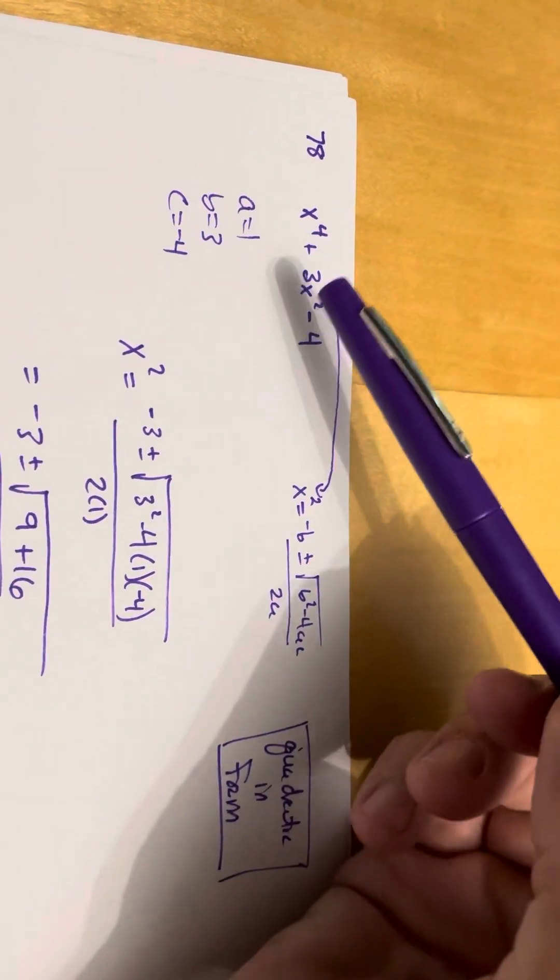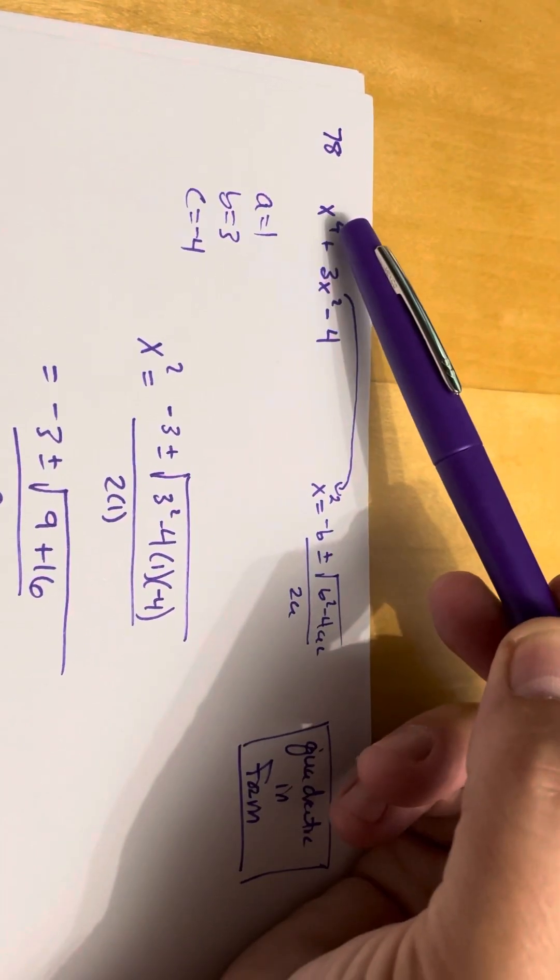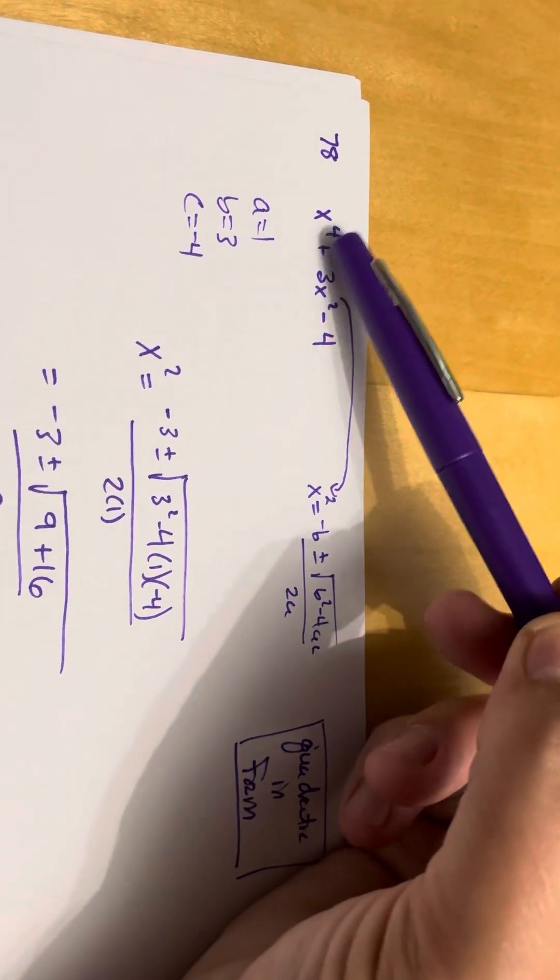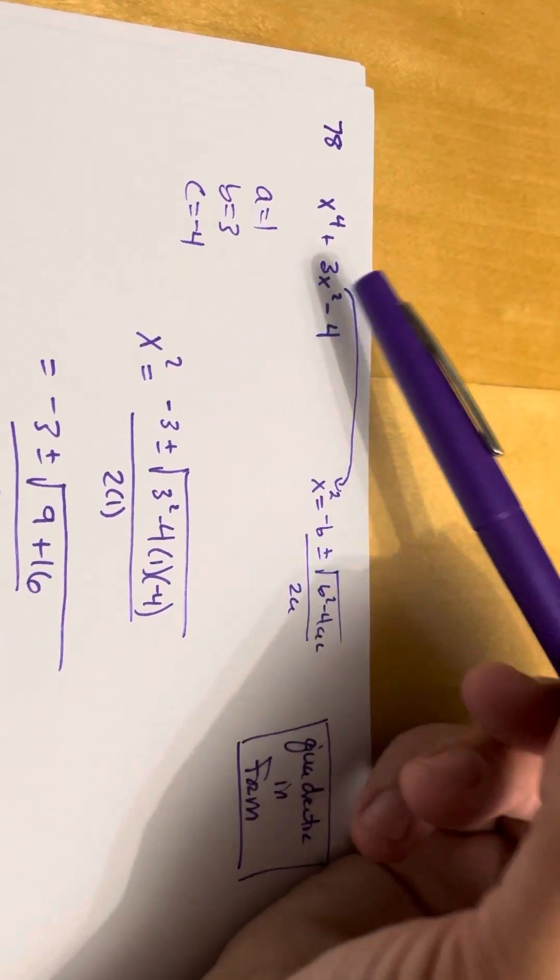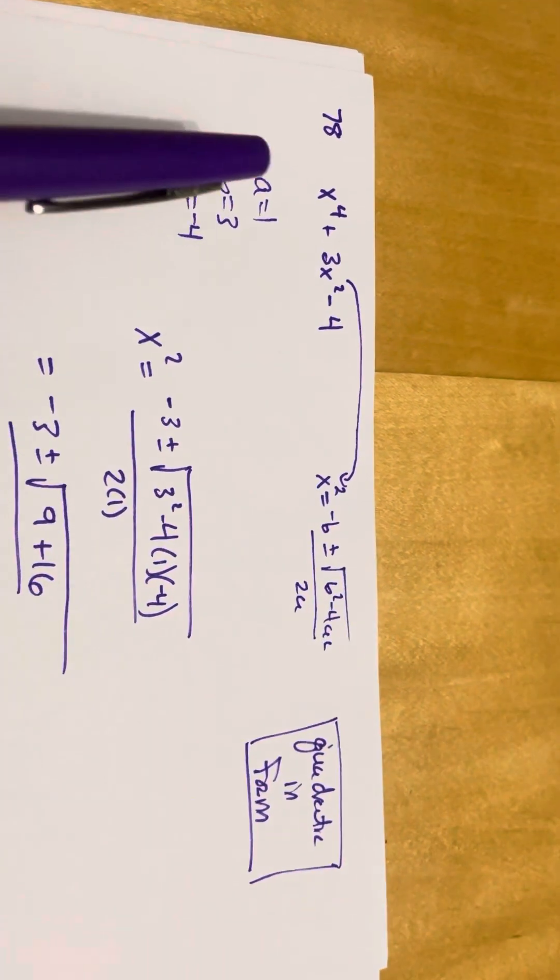So, what ends up happening is you take whatever this variable is. So, if this was x to the 6th, then this was x cubed. You'd use x cubed here. If this was x to the 8th, then this is x to the 4th. You'd put x to the 4th here. So, you treat it the same way.